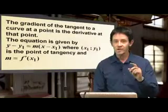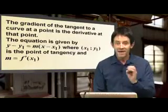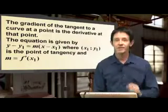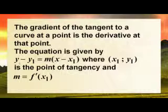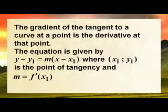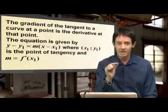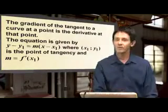The most important thing that you need to write down, guys, is the gradient of a tangent to a curve at a point is the derivative at that point. Remember, when you differentiate, when you get the gradient, that is the gradient of the tangent to a curve. And the equation is given by this equation. If you remember it, Y minus Y1 is M times X minus X1, where X1, Y1 is the point of tangency.